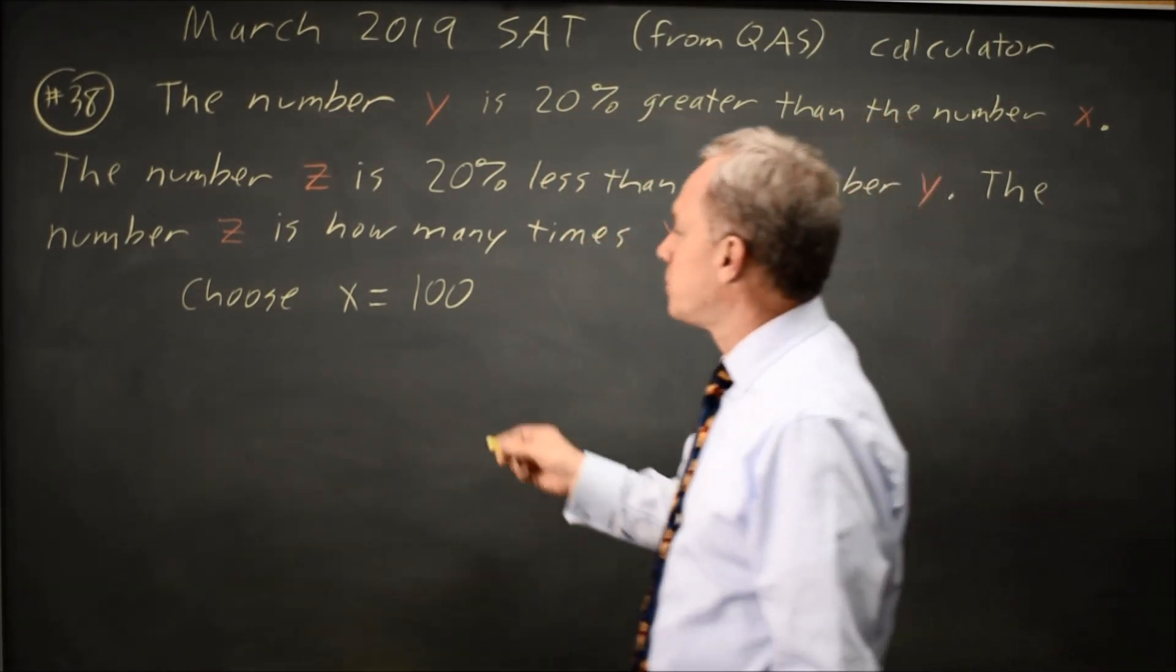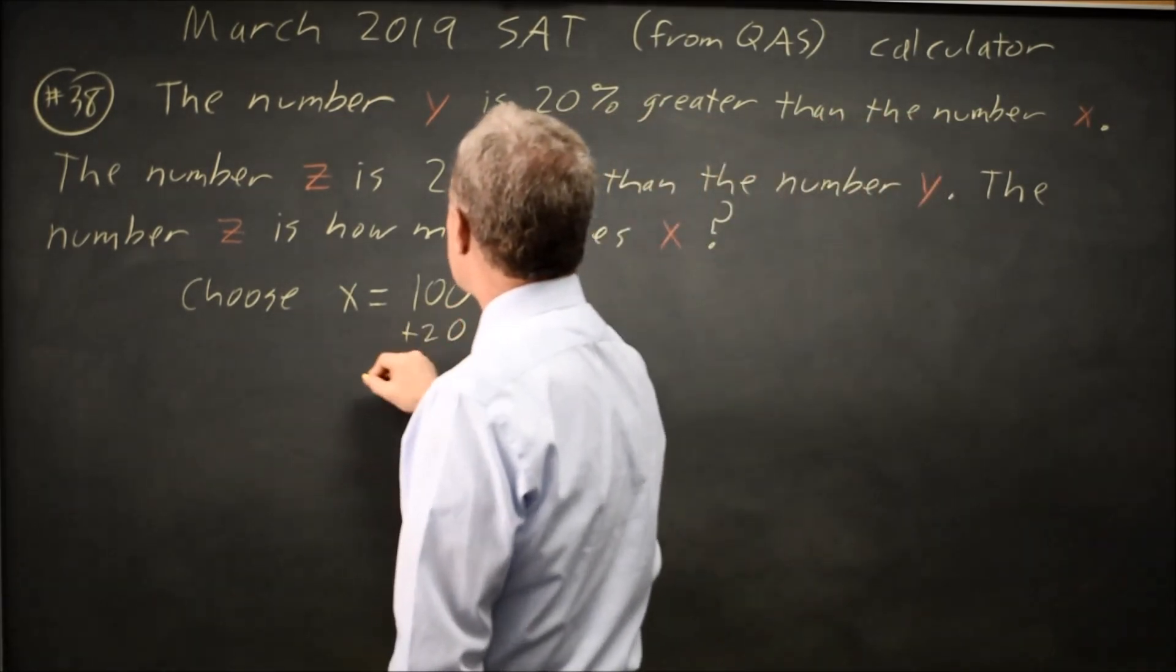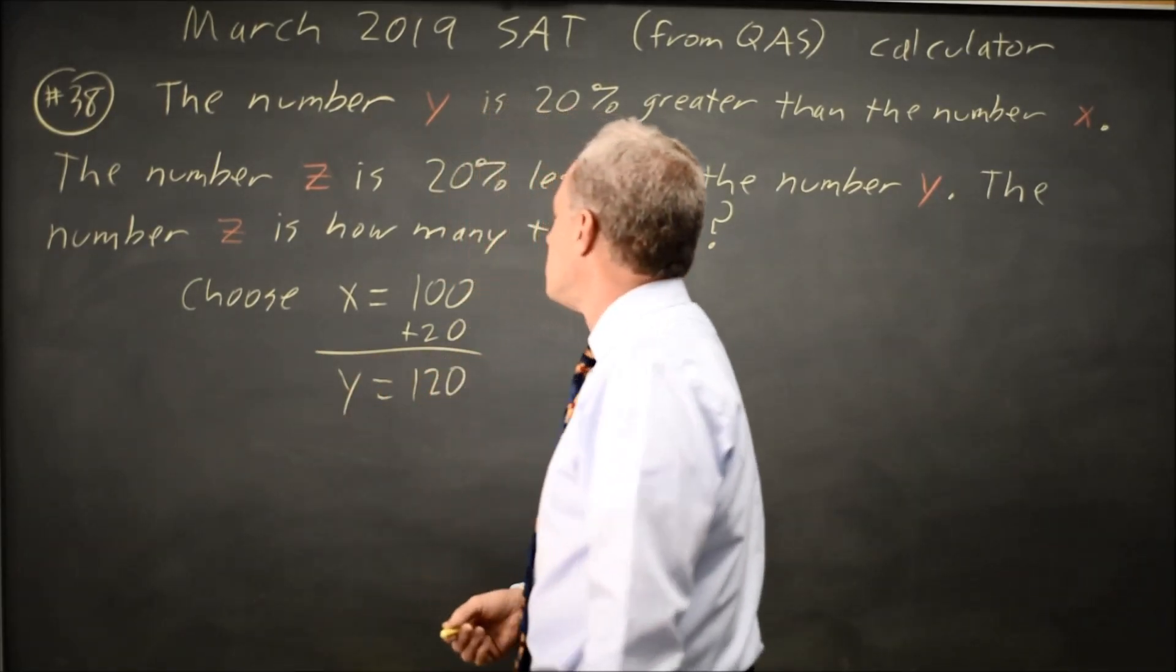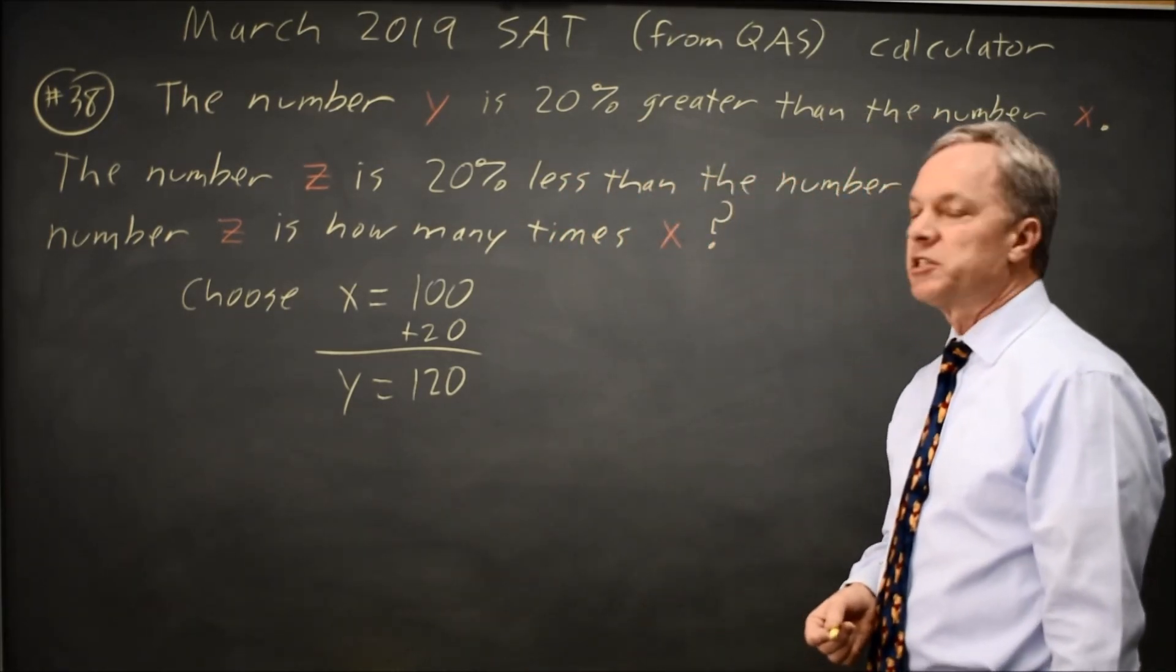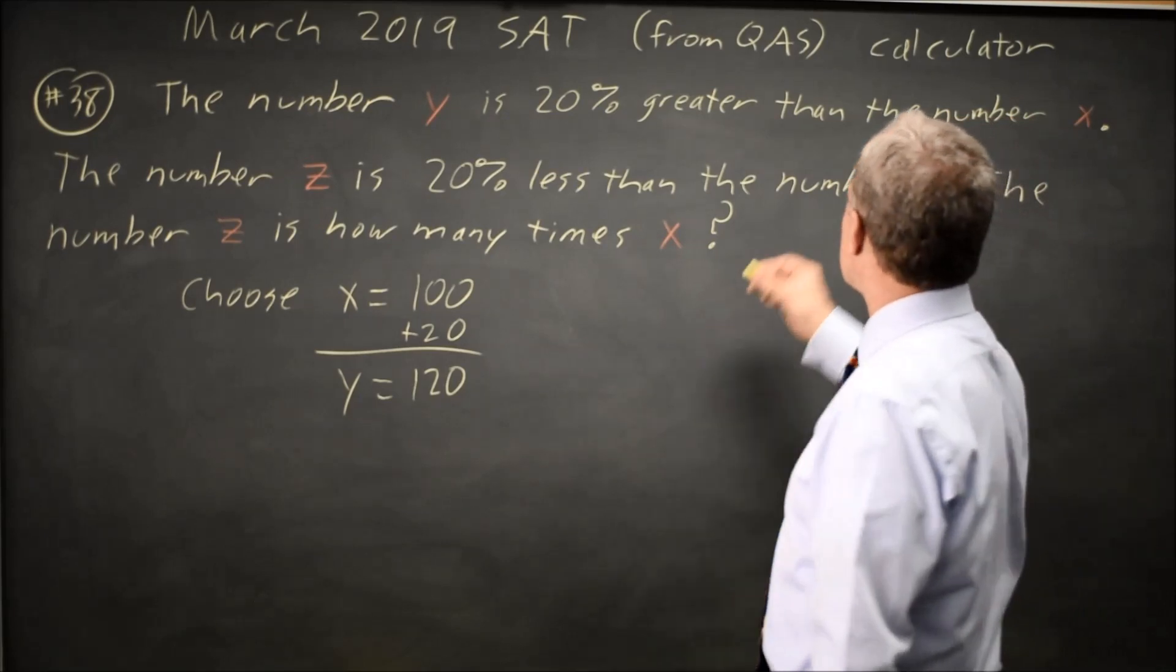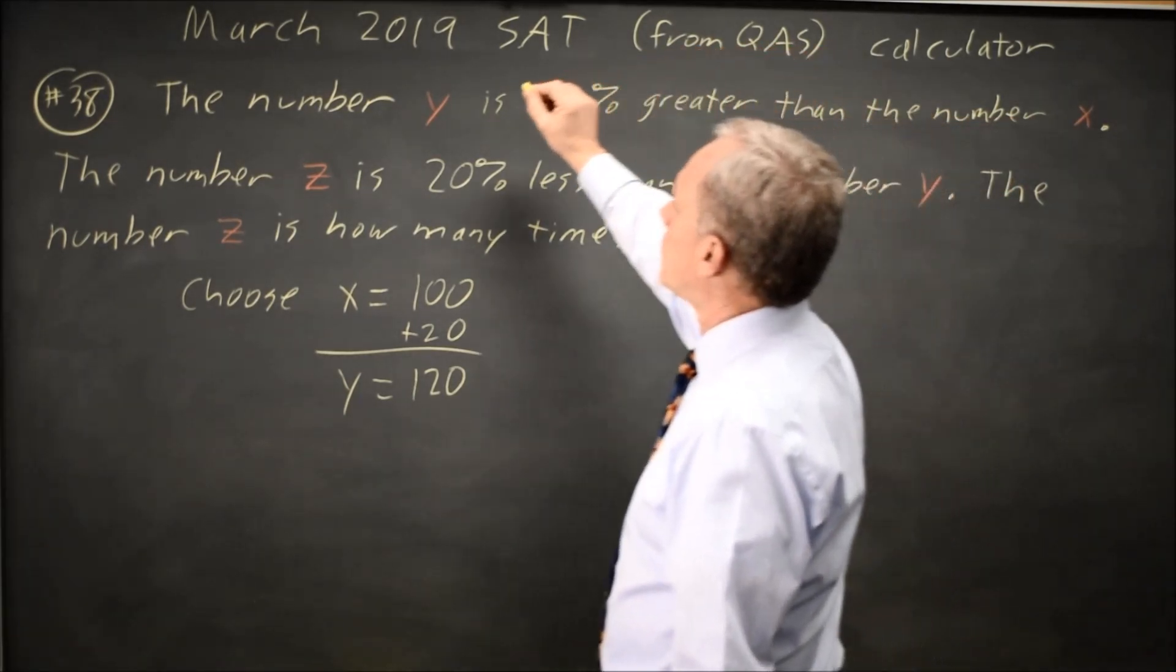20% of 100 would be 20 and we want to be 20% greater. So Y is 20% greater, is 120. I could also do that on my calculator, 0.2 times 100 and then add that to 100. So I now know that X is 100, Y is 120,